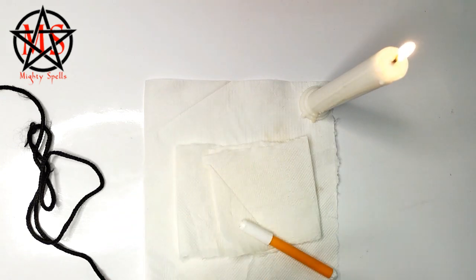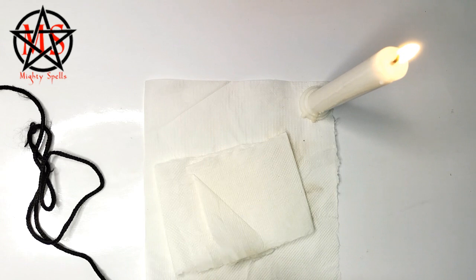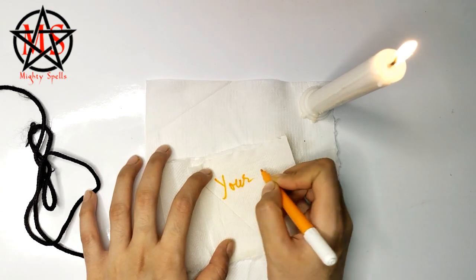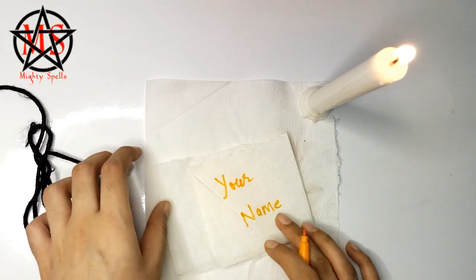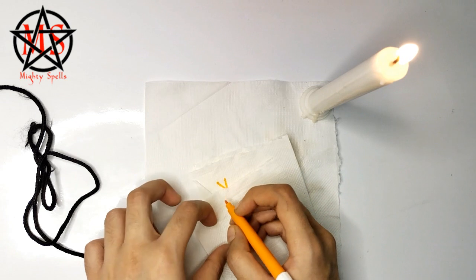After lighting up the candle, you have to take the paper and write the names. At first you have to write your name on a paper, and on the second paper you have to write the name of the person you want to bind.